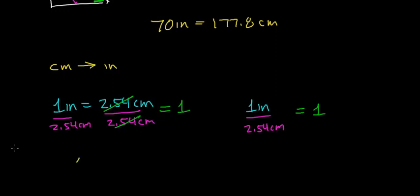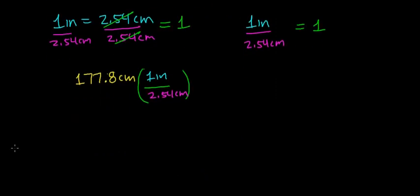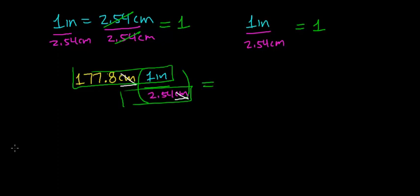So in this case, we take 177.8 centimeters and multiply it by our conversion factor, which equals one. We put 2.54 centimeters on the bottom and 1 inch on the top. The unit of centimeter cancels out with the unit of centimeter — units cancel just like real numbers do. Then we multiply the terms in the numerator and divide by the denominator. We get 177.8 inches divided by 2.54, which gives us 70 inches — exactly what we started with.